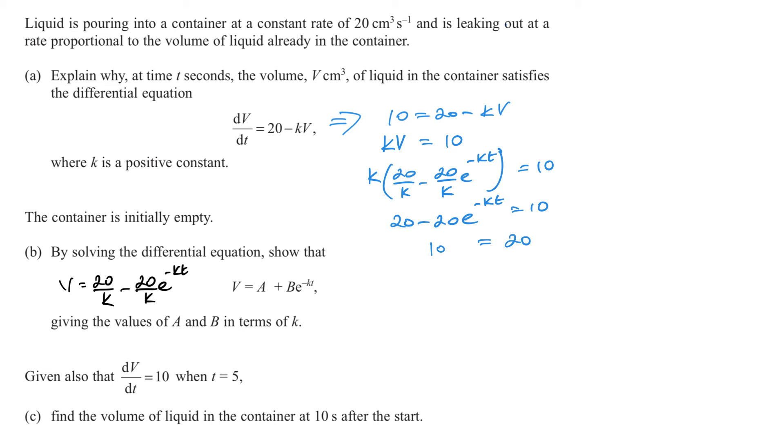We get 10 equals 20e to the minus kt. If I divide by the 20, I'm going to get a half equals e to the minus kt. Remember that t equals 5, so that's a half equals e to the minus 5k. Rearranging, I'm going to get e to the positive 5k equals 2. This is going to be 5k equals ln 2. So, k equals 1 fifth ln 2.